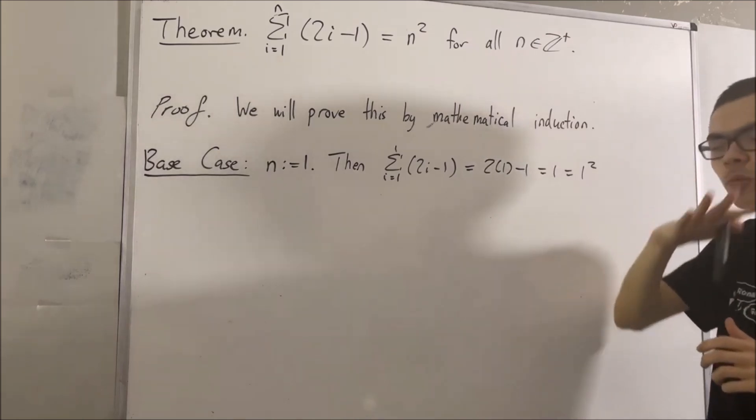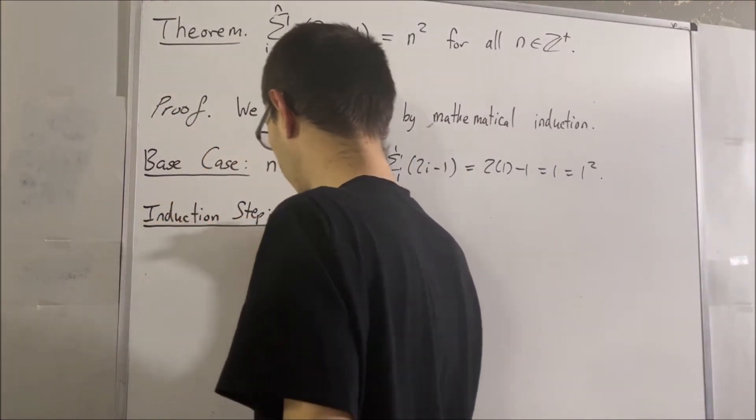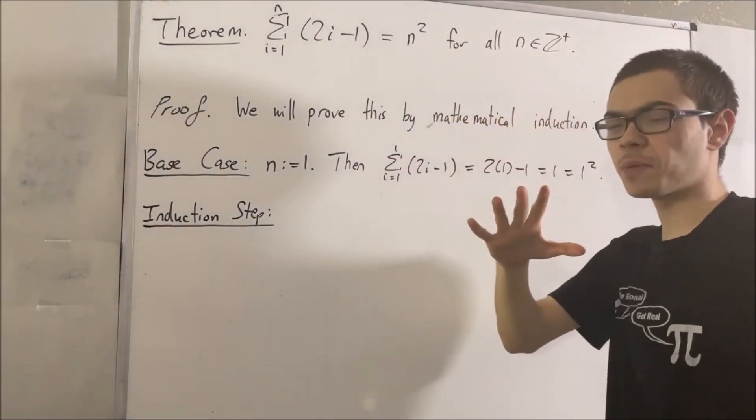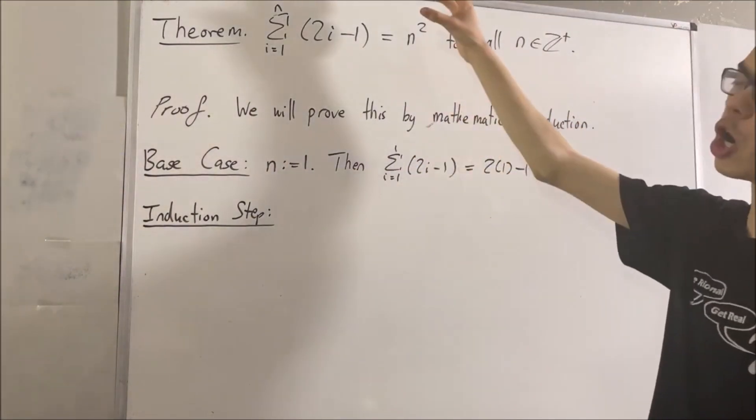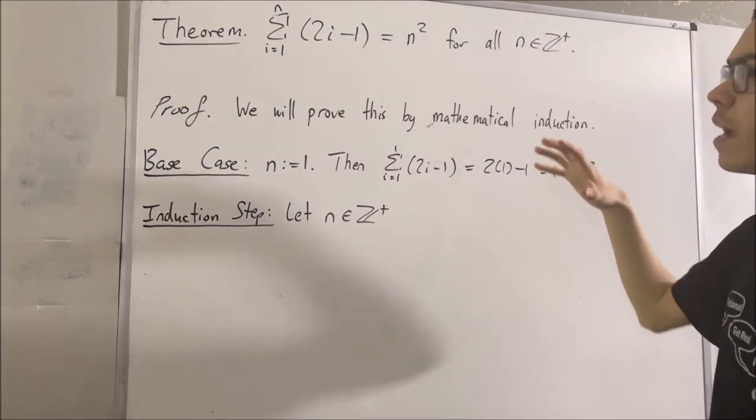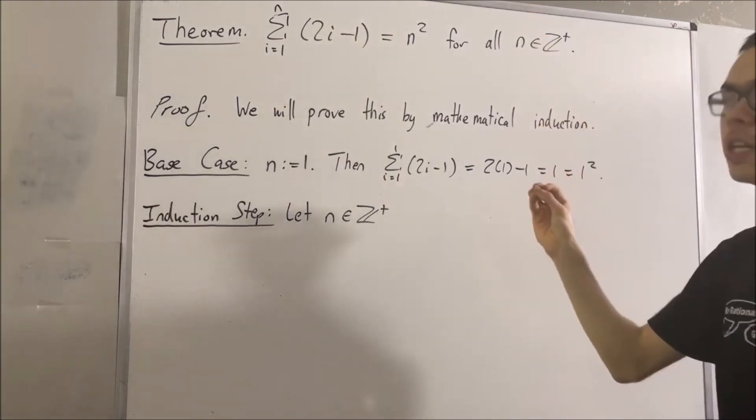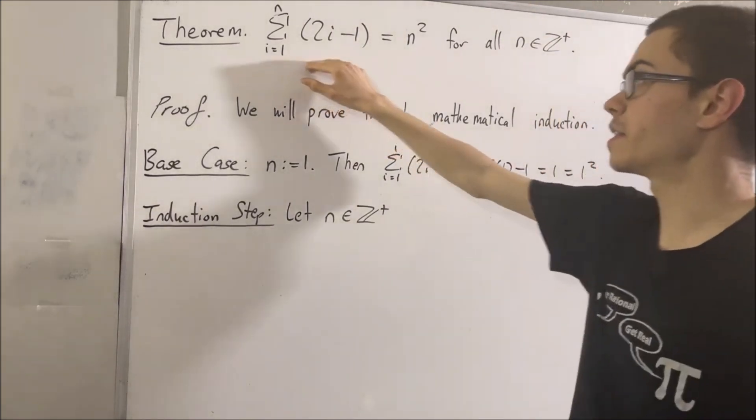So now we're going to move on to the induction step. Now, if we recall, in the induction step, what we do here is we pick out an arbitrary positive integer n. And we assume that this arbitrary positive integer n that we picked out is one where this statement holds.